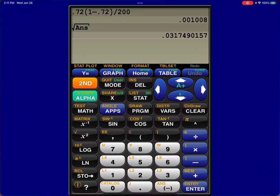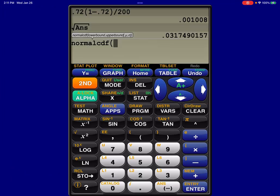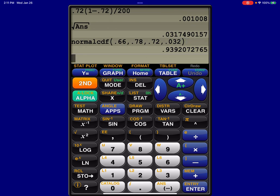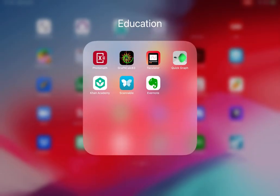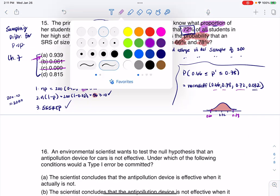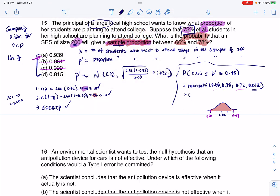Let me head over to my calculator, and we're going to go with normal CDF. My low is going to be 66, the high was 78, the mean was 72, and the standard error was 0.032. If I crunch it, I get about 0.939. So let me write this over here. This is 0.939. And then when I look, yep, sure enough, that is answer A. All right, thanks.